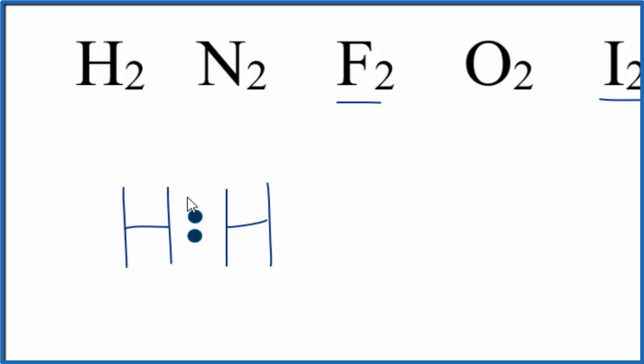And this is the Lewis structure for H2. Hydrogen's kind of an exception. It only needs two valence electrons to have a full outer shell. So this hydrogen has two, this hydrogen has two. That's our Lewis structure for H2.